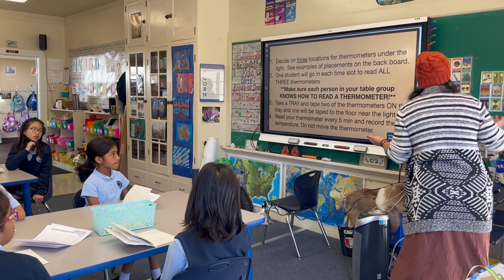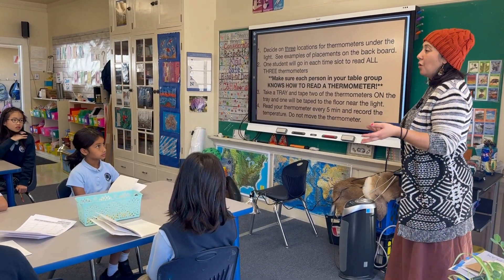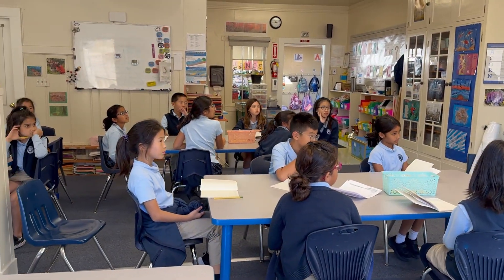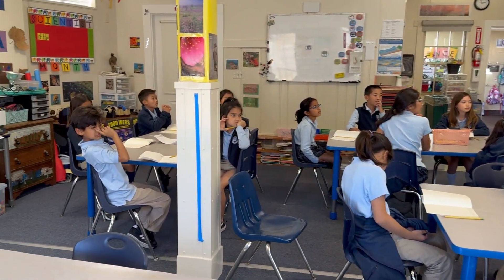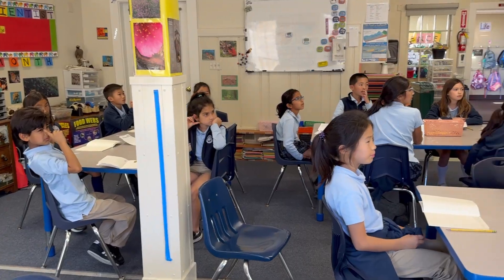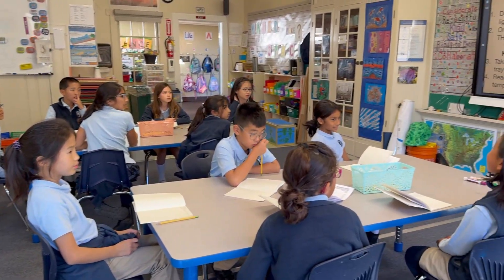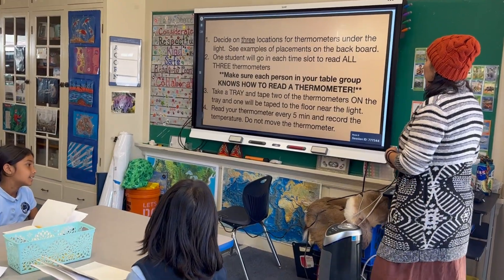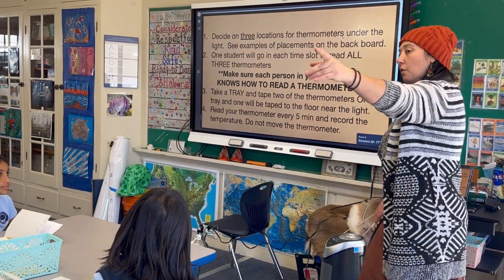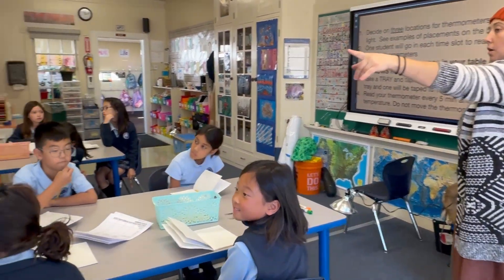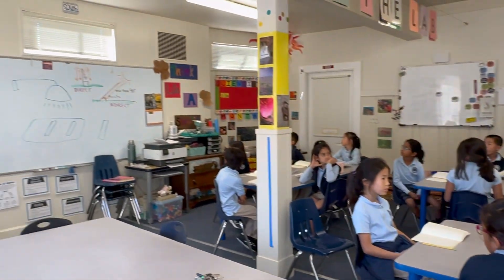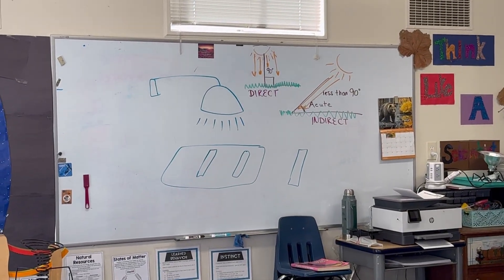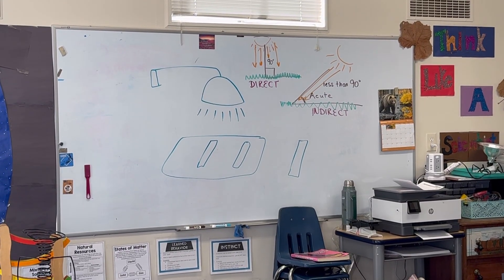The room is at a certain temperature — right now it's 67 degrees — so you're probably not going to get a really cold place, but under the heat lamp we would expect to get something warmer. I gave you some examples of where you could place them on the back board. The rectangle shape is there because some groups find it easier to tape onto a tray.